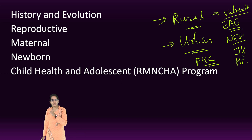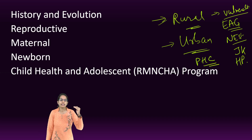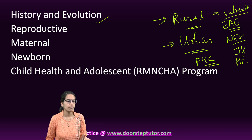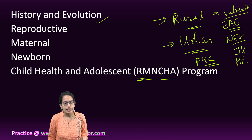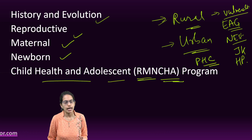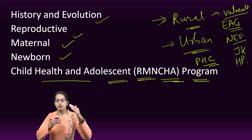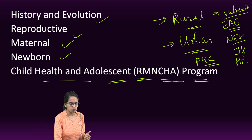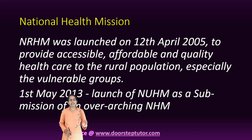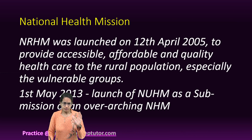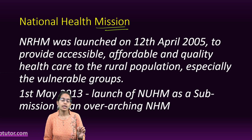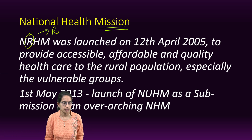In this lecture, our focus is to understand how the National Health Mission evolved — its history — and the RMNCHA, that is the Reproductive, Maternal, Newborn, Child Health and Adolescent program. The idea was laid down in 2005, when the National Health Mission was initially incorporated only in the form of the Rural Health Mission.